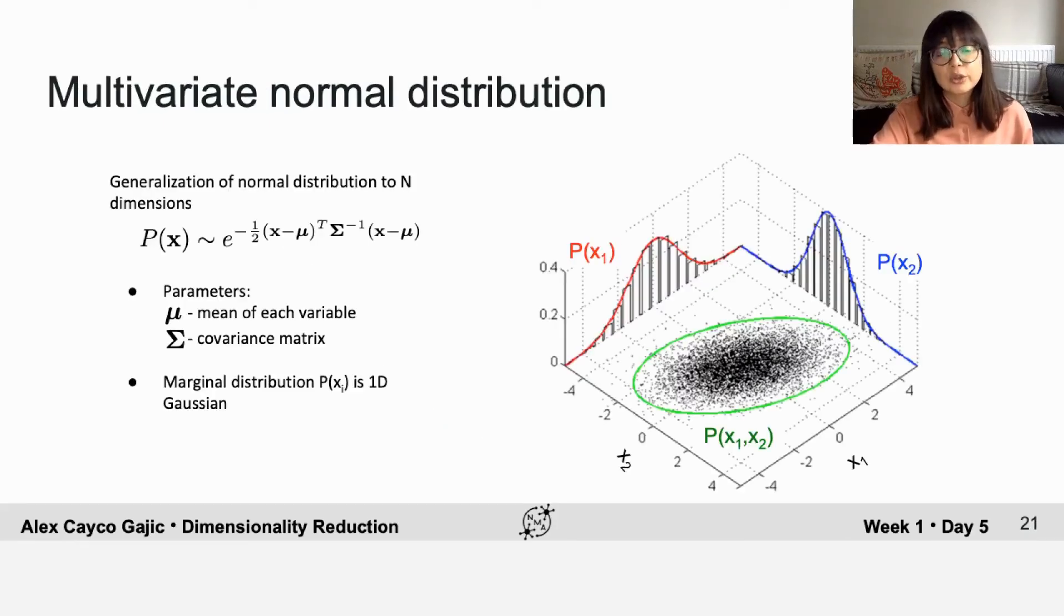In the first exercise, you'll model neural data as coming from a multivariate normal distribution. This is a generalization of a one-dimensional normal distribution to n dimensions with a given covariance structure. So the joint distribution is given by this exponential form that's written here.